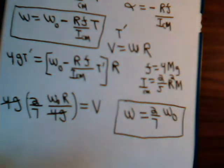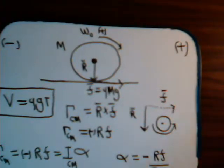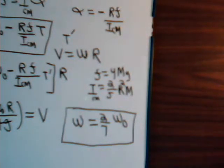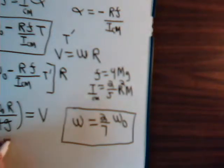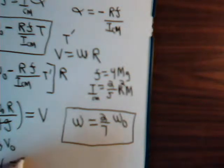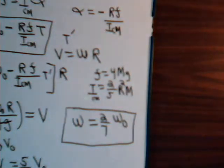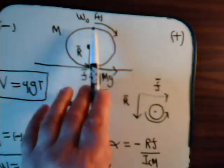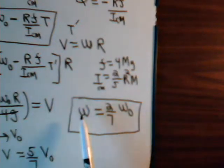It starts off with an initial angular velocity omega-0, and by the time it gets into pure roll its angular velocity is two-sevenths of that value. You might remember from the last video, number 33, when we had the opposite situation — the billiard ball began with a linear velocity V-naught — by the time it got into pure roll, the linear velocity equaled five-sevenths its initial value. Here, when we have pure angular velocity initially, by the time it gets into pure roll, that angular velocity is equal to two-sevenths its original value.